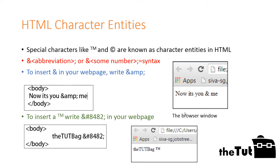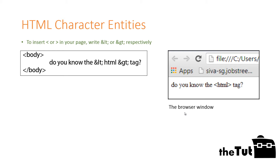When the page is displayed, you will see the character entity being rendered appropriately. A great number of character entities exist. For example, you cannot directly use the less than or greater than symbols inside your HTML code, because tags are represented using those symbols. Use &lt; and &gt; for showing these symbols.